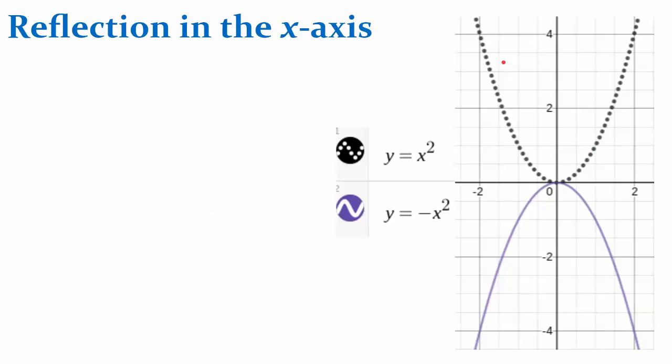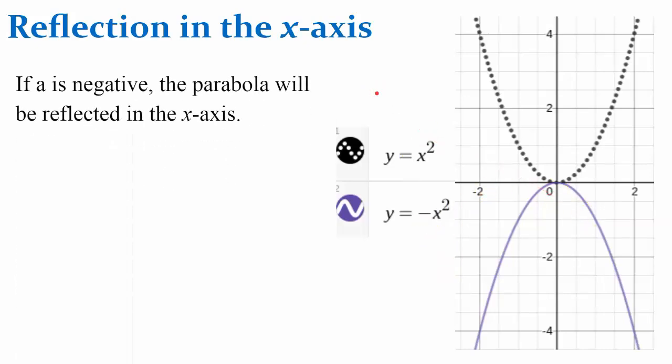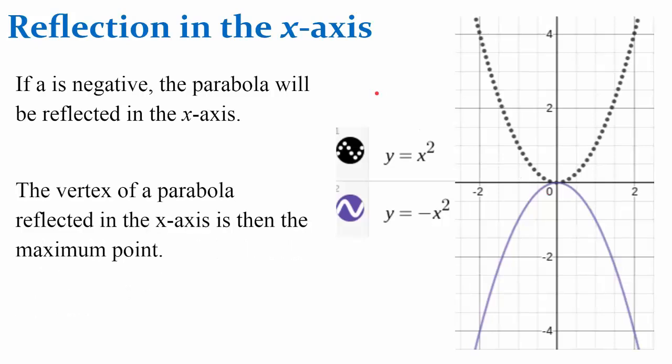Let's talk about reflection in the x-axis. Here's our parent function again, the black dotted line, where a is 1. Now we see that a is negative 1, reflecting it in the x-axis. Now our vertex becomes the maximum point on the graph when we have a reflection in the x-axis.